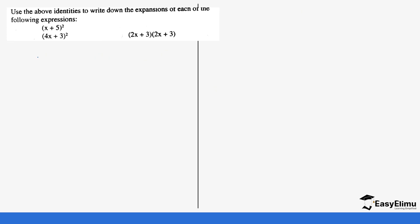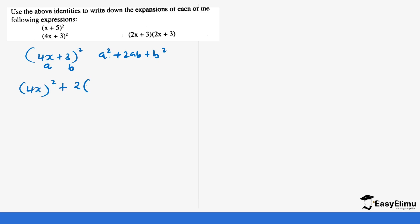For (4x + 3) squared: a is 4x and b is 3. Using a squared plus 2ab plus b squared: a squared is (4x) squared which gives 16x squared, plus 2ab which is 2 times 4x times 3, giving 12x times 2 which is 24x, plus b squared which is 3 squared giving 9. The answer is 16x squared plus 24x plus 9.